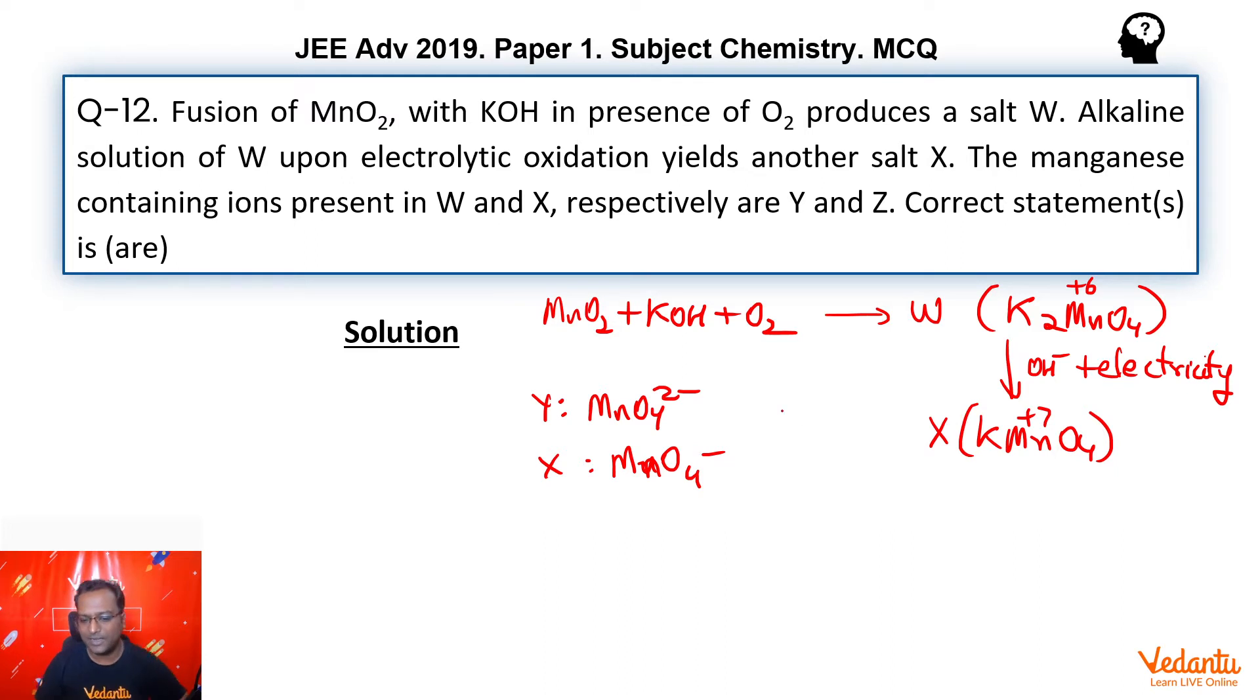Now we know that K2MnO4 is green in color. MnO4 minus is purple in color, purple-pink in color. If we talk about MnO4 2 minus structure, let's quickly draw. This is MnO4 2 minus and MnO4 minus, that is permanganate ion. As you can see, in both situations it is sp3 hybridized. There are four sigma bonds, it's tetrahedral in shape.